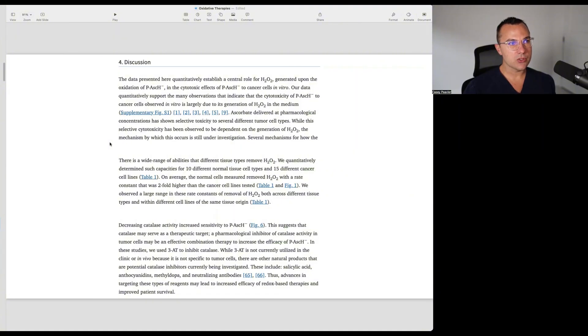We observed a large range in these rate constants for removal of hydrogen peroxide both across different tissue types within the different cell lines of the same tissue origin. Decreasing catalase activity increased sensitivity to ascorbic acid. This suggests that catalase may serve as a therapeutic target. A pharmacological inhibitor of catalase activity in tumor cells may be an effective combination therapy to increase the efficacy of ascorbic acid. In these studies, we used 3-AT to inhibit catalase. While 3-AT is not currently utilized in the clinic or in vivo because of its non-specific to tumor cells, there are other natural products that are potentially catalase inhibitors being investigated. This includes salicylic acid, anthocyanidins, methyldopa, and neutralizing antibodies. These advances in targeting these types of reagents may lead to increased efficacy of redox-based therapies and improve patient survival.